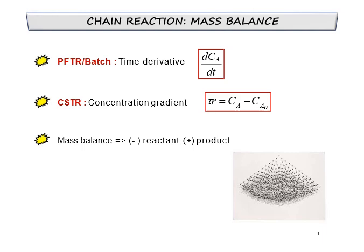For the mass balance, if the chain reaction happens in a PFTR or batch reactor, the mole balance we will use is in the form of differentiation of concentration over time for batch, but for PFTR it is differentiation of concentration over differentiation of space time. As for CSTR, we will use concentration gradient, where tau times reaction rate equals the remaining concentration minus initial concentration.